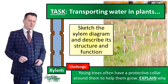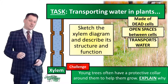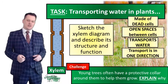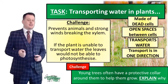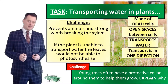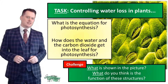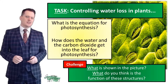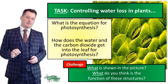The four things to note about xylem: it's made of dead cells; it has open spaces between those cells; its primary function is to transport water; and it only moves in one direction. The protective collars on young trees prevent animals and strong winds from breaking the xylem. If the plant is unable to transport water to the leaves, it would not be able to photosynthesize, which would result in the death of the plant. Our next task is a recap: what is the equation for photosynthesis, and how do water and carbon dioxide get into the leaf?